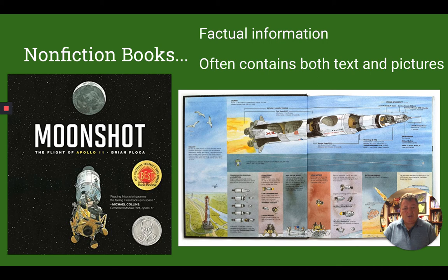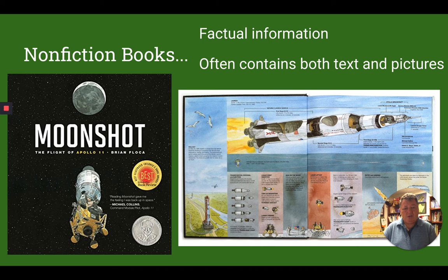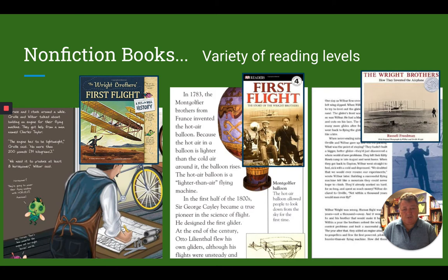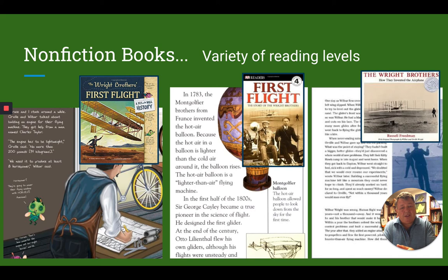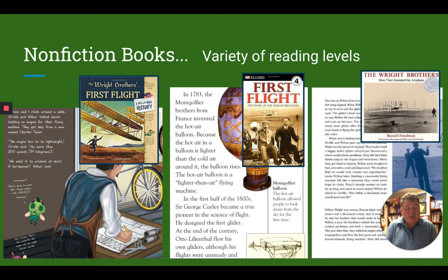Non-fiction simply means it's facts, and here's Moonshot again. These books often contain pictures, text, or a combination — especially for kids to keep their interest. A great thing about non-fiction books is they come at a variety of reading levels. Here are three different books about the Wright brothers. The one on the far left is an easy reading level with only three short paragraphs. First Flight in the middle has longer paragraphs with harder vocabulary. The Wright Brothers by Russell Freedman is much more text-based with fewer pictures and greater reading difficulty.